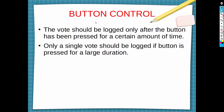For the button control module, a button has to be pressed for a sufficient amount of time in order for the vote to be logged. It cannot simply start logging the moment the button is pressed, otherwise you could cast multiple votes by repeatedly pressing the button. On the other hand, once the button has been pressed for a sufficient amount of time and the vote has been logged, it must not log any further votes while the button is still held down.